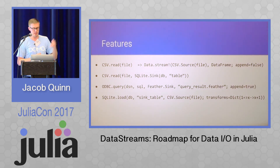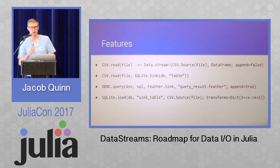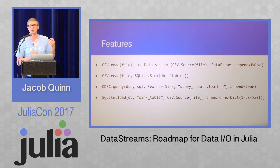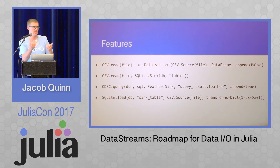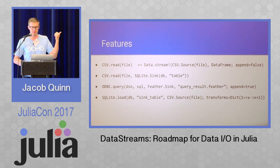Similar with the others — these are just a couple of examples. The third one, you'll notice I say append equals true at the end. This is maybe an existing feather file, and I have another ODBC query that I want to append to the result of that file — it'll append, no problem. And then the last one is another SQLite example where I'm actually including a transform function. The transformation happens at streaming time, so as each value is streamed from the source to the sync, the transformation is applied and sent out to the sync. You can do simple scalar transformation, column by column — give it the column number and then give it a transform function.